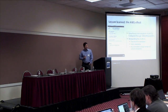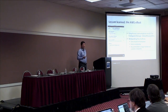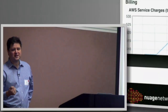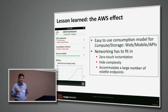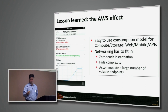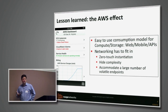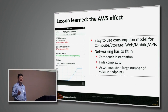The other important lesson is what I call the AWS effect. Amazon Web Services introduced an easy-to-use service development and consumption model where you can go on a web interface, a mobile application, or use simple APIs to basically order, consume, and monitor your compute and storage services. This created a whole discussion about cloud networking: you have to have zero-touch instantiation in the network, you have to hide the networking complexity, and you have to accommodate a large number of compute nodes that come up and down, potentially moving between different network attachment points — the same as in mobile networks.